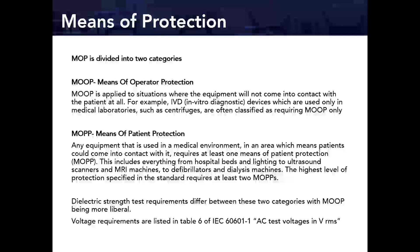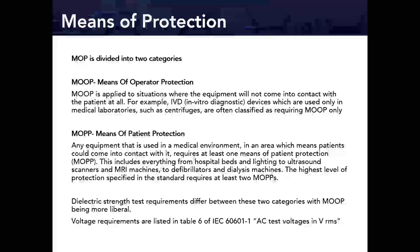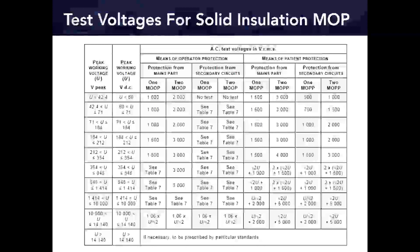Specific machines designed to be placed on the patient — defibrillators, dialysis machines — require the highest level of protection specified in the standard, which requires at least two means of patient protection. The dielectric strength test requirements differ significantly between these two categories, as shown in Table 6 of the standard.